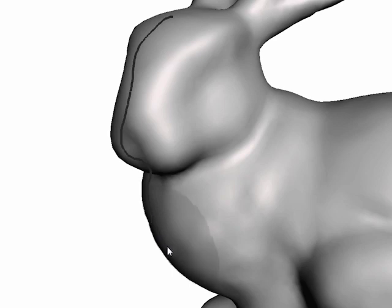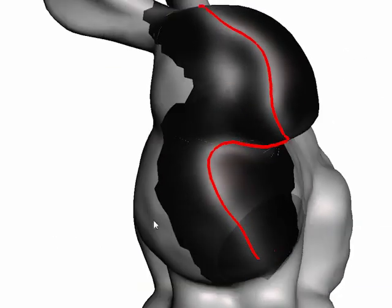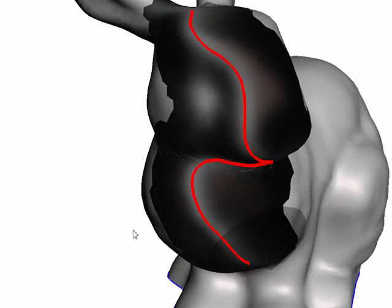In this example we snap the user's stroke to the occluding contour from this viewpoint. The calculated image map is displayed on the surface.